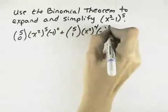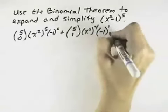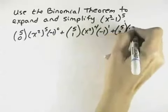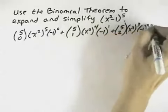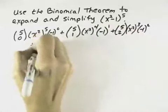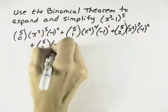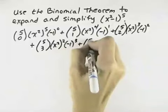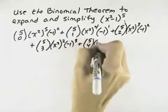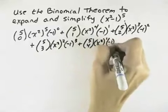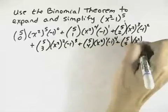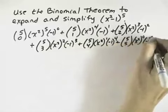Our negative 1 is increasing to the first power. Then we have C(5,2). This time the x squared decreases to the third power, and the negative 1 increases to the second power. Continuing, we have C(5,3) with the x squared decreasing to the second power, the negative 1 increasing to the third power. C(5,4) with the x squared decreasing to the first power, and the negative 1 increasing to the fourth power. And finally, C(5,5), where the x squared is to the zero power, and the negative 1 is to the fifth power.